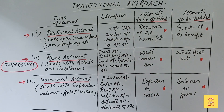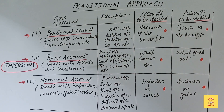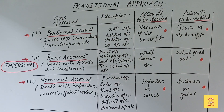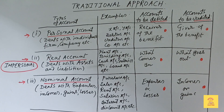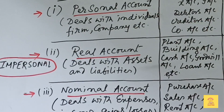The accounts involved in a transaction have to be found out first, then which account should be debited and which should be credited can be determined. Debit and credit are the indicators of accountancy — they show the position of business. Under the traditional approach, accounts are classified into three parts: personal account, real account, and nominal account.